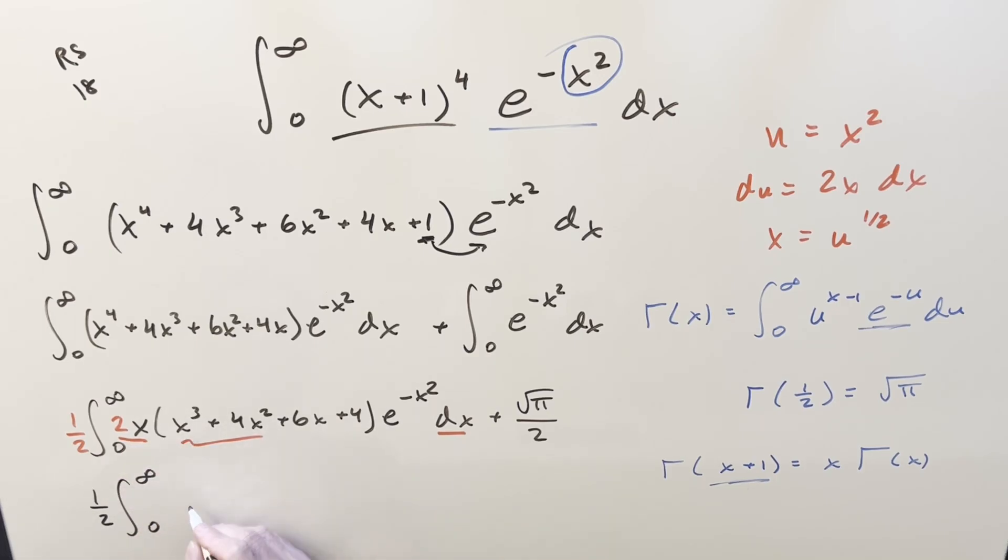Then this part is going to be with our du. x^3, that's going to become u^(3/2), just using this. And we're going to have plus 4x^2, it's going to be just a u, plus 6, which is u^(1/2). Then it's just going to be a plus 4. This thing now just becomes e^(-u), du, and we still have the constant.